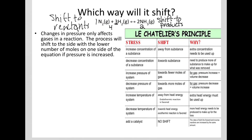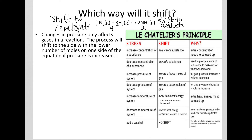This will play a role when we want to try to make more products, because we want to shift it always towards the products. As a recap: increasing pressure shifts towards fewer moles of gas only; decreasing pressure shifts towards more moles of gas — something good for a note card.